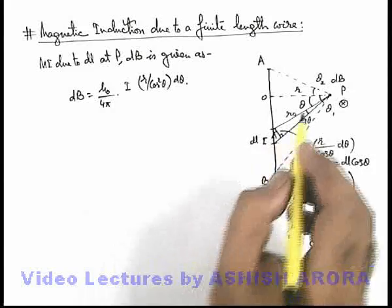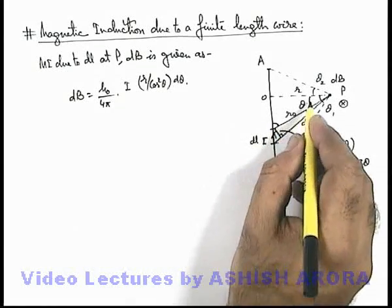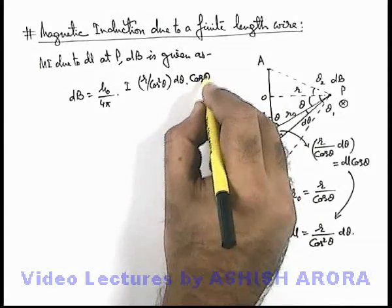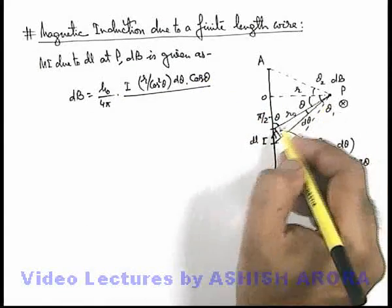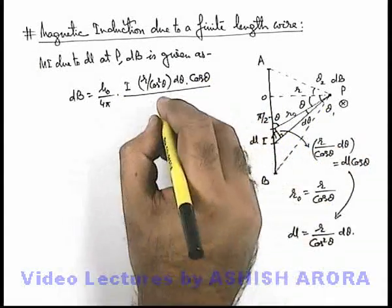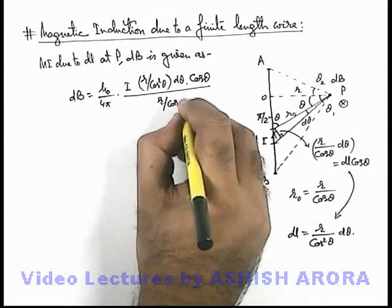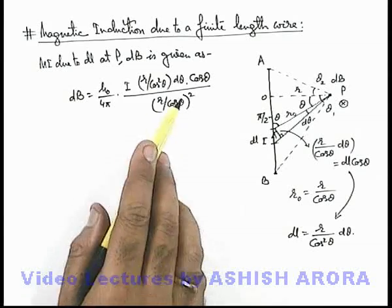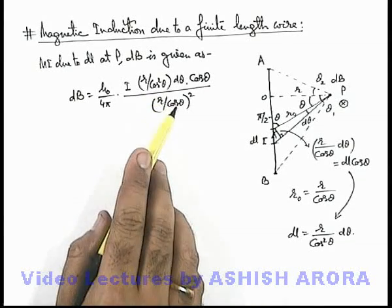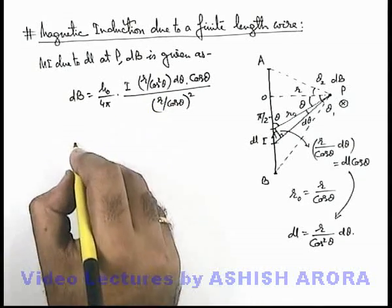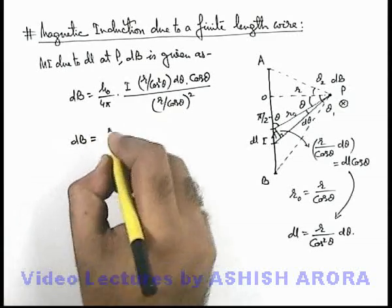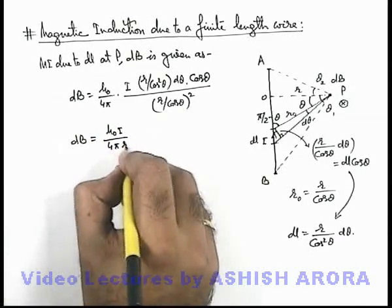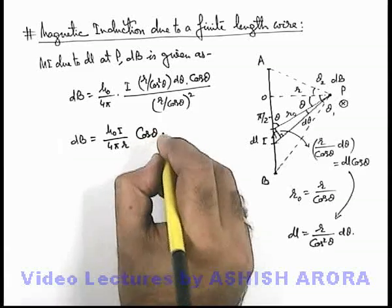Multiplied by sine theta. So if this angle we talk about, if this is theta, this is π/2 minus theta, it can be written as cos theta divided by this r-not squared, which can be written as r by cos theta whole squared. So in this situation we can see this cos squared theta gets cancelled out. The value of dB on simplifying we are getting is μ₀i by 4πr cos theta d-theta.